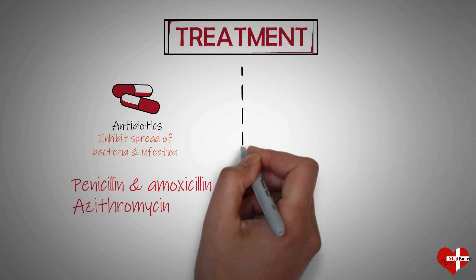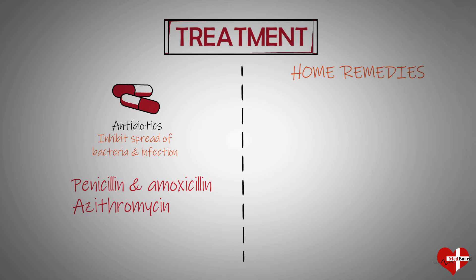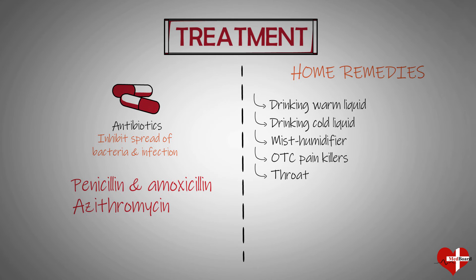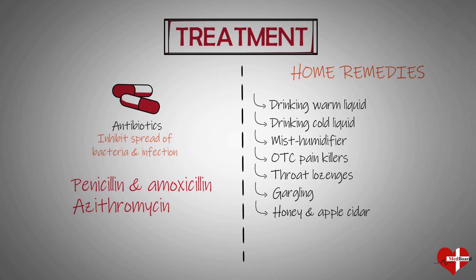In addition to antibiotics, there are at-home treatments that can help relieve the symptoms of strep throat. These remedies include drinking warm liquids such as lemon water and tea, drinking cold liquids to help numb the throat, turning on a cool mist humidifier, taking over-the-counter pain relievers such as ibuprofen or acetaminophen, sucking on throat lozenges, and gargling a mixture of one-half teaspoon of salt in one cup of water. Natural remedies such as honey and apple cider vinegar may also help.